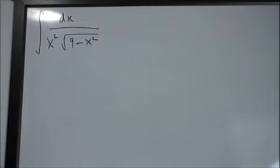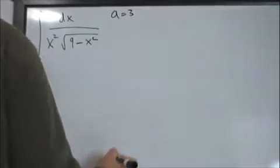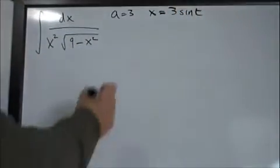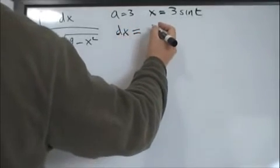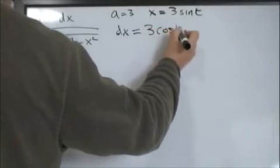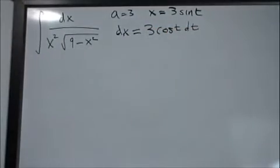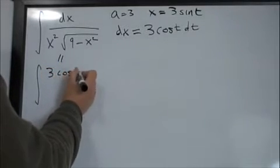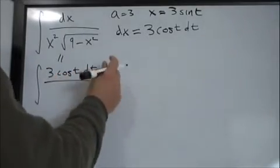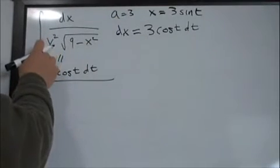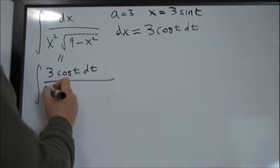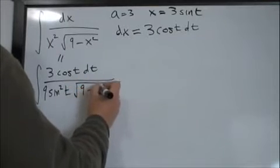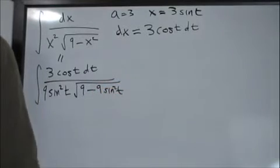So we use trig substitution with a = 3, setting x = 3·sin(t), so dx = 3·cos(t) dt. Rewriting the integral: the numerator becomes 3·cos(t) dt, and the denominator has x² = 9·sin²(t), and then the square root √(9 - 9·sin²(t)).